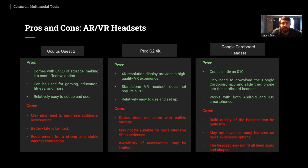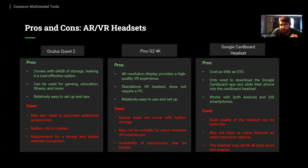The second headset is the Pico G2 4K. As the name suggests, it has a 4K resolution display that provides a high-quality VR experience. It is a standalone VR headset that does not require a PC, which is a major advantage, and it is relatively easy to set up. However, unlike the Oculus Quest 2, it does not come with built-in storage and may not be suitable for more intensive VR experiences. Availability of accessories may also be limited.